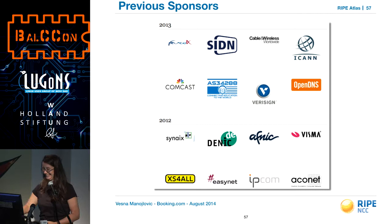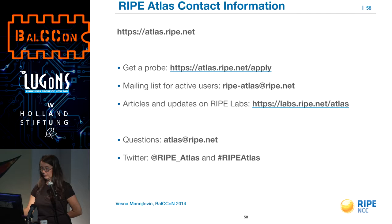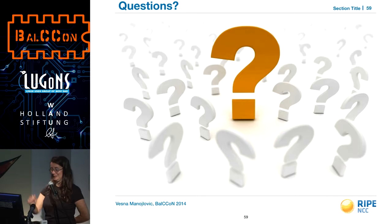This is how you can get in touch with us. We have a mailing list, there are a lot of articles written about Atlas on RIPE Labs, and there are contact details. That was it — however there is more in the appendices.